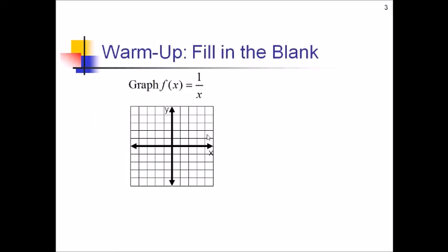For our warm-up, we'll take a look at the simplest rational function out there: f of x equals 1 over x. Pause the video and take a sec to graph this. For your graph, you should have come up with two branches, one down here and one up here, like so. We can see from this graph that we're not touching either the y or the x axis. So rational functions always, sometimes, or never have x or y intercepts — clearly they do not always have x and y intercepts.